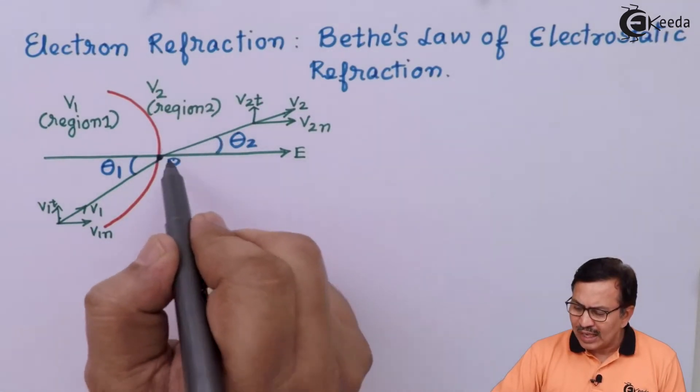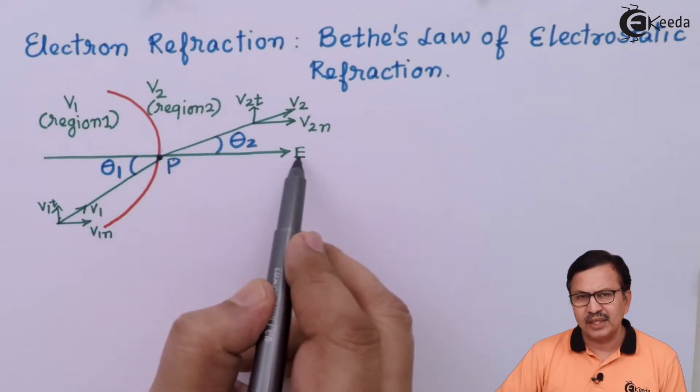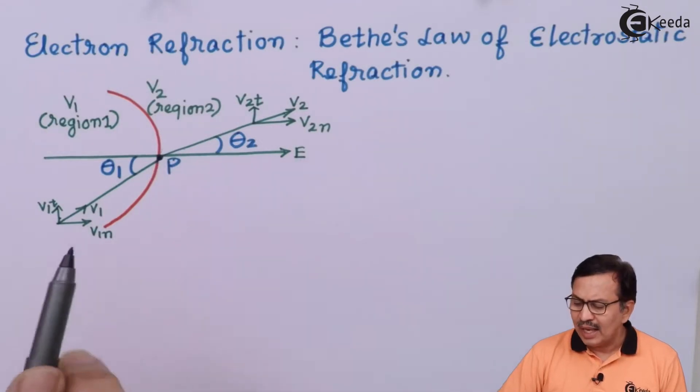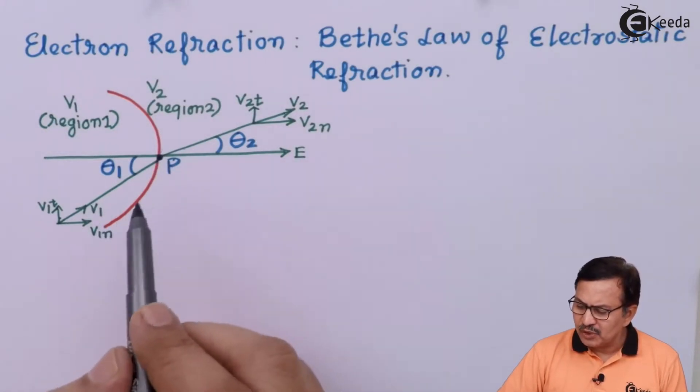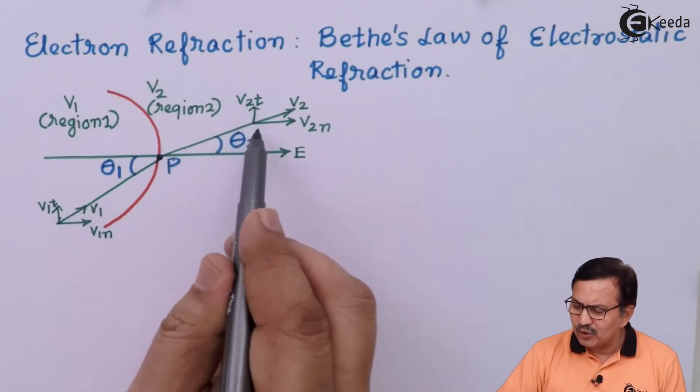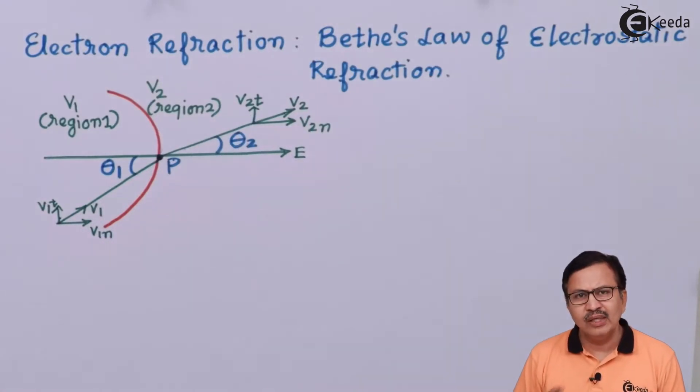So at this particular point P, the electric field is directed in this direction, and due to this, it will so happen that the tangential components of the velocity will remain the same. They will remain unaffected.